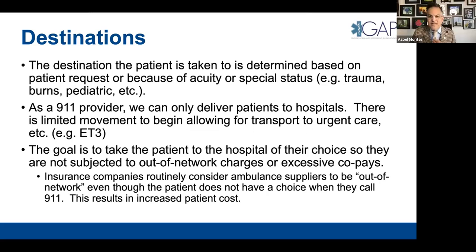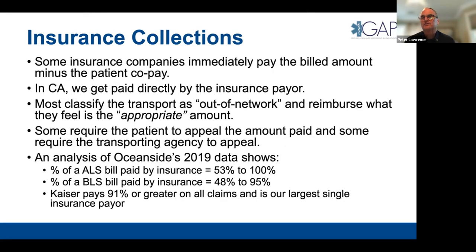In California, insurance payments go directly to the provider rather than the patient. Most transports are considered out-of-network by insurers. Some pay immediately minus the copay; others require the patient or transporting agency to appeal. Looking at 2019 data, ALS was paid by insurance at 53–100% of billed; BLS at 48–95%. Kaiser pays 91% or greater on all calls and is our largest single insurance payer.